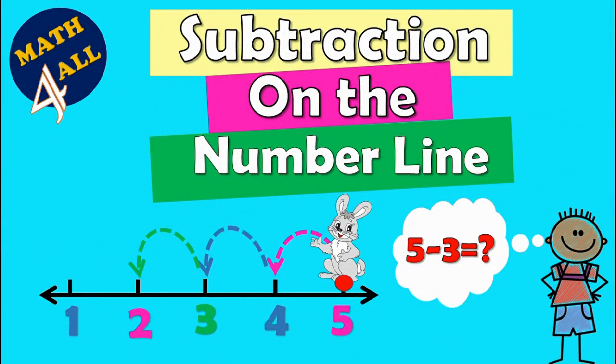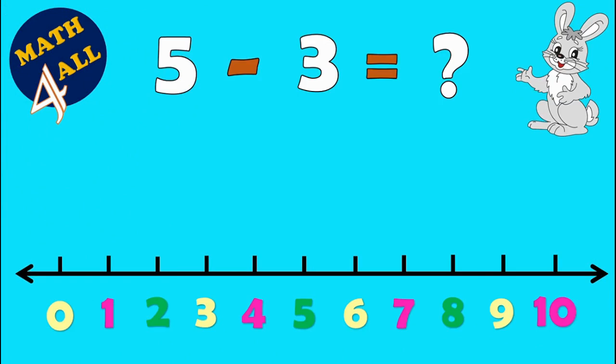Subtraction on the number line. How can we subtract on the number line? Here we have 5 minus 3 equals what, or 5 take away 3. First step: stop on the biggest number. Here the biggest number is 5.